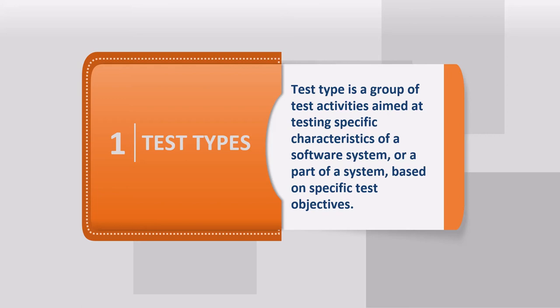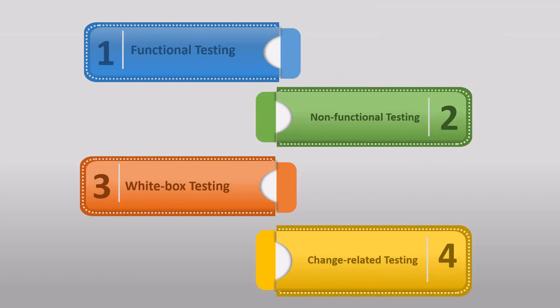Depending on which characteristic of the software we test, we classify them into different test types. These are the four different test types, and here we will see what type of characteristics are tested under each. We are now only going to define test types, and in the next lecture we will address each of these types in detail.